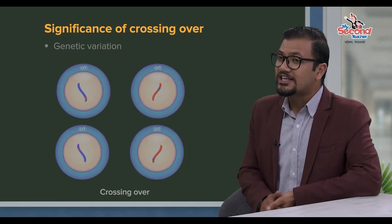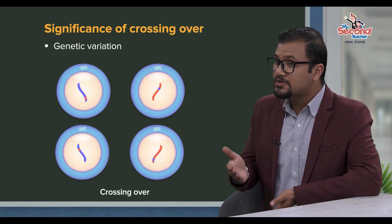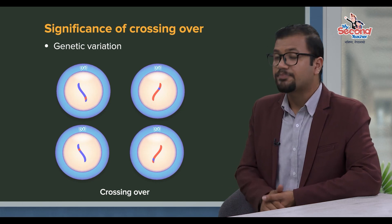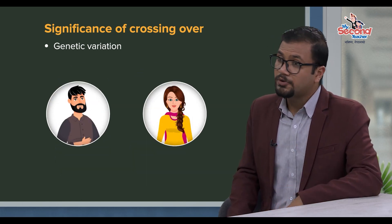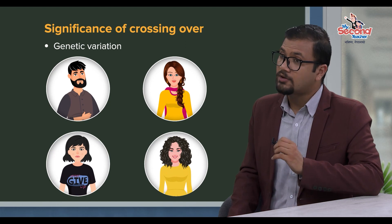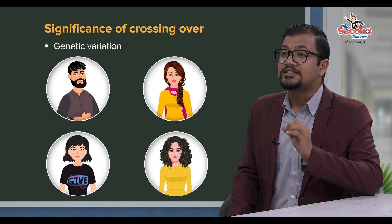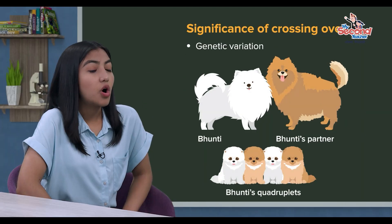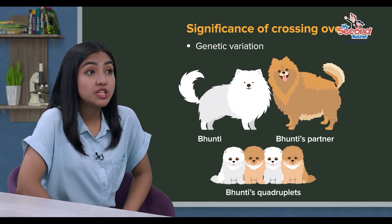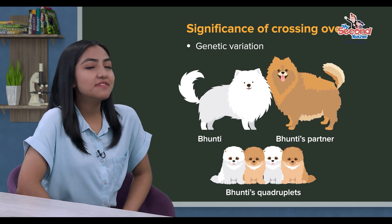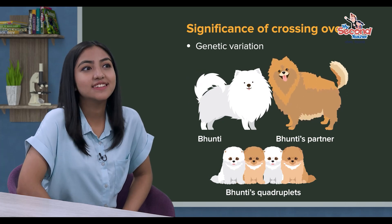That's why the gametes are not 100% genetically identical. As a result, the offspring produced by the parents have genetic variation. It's a genetic variation in the genes.